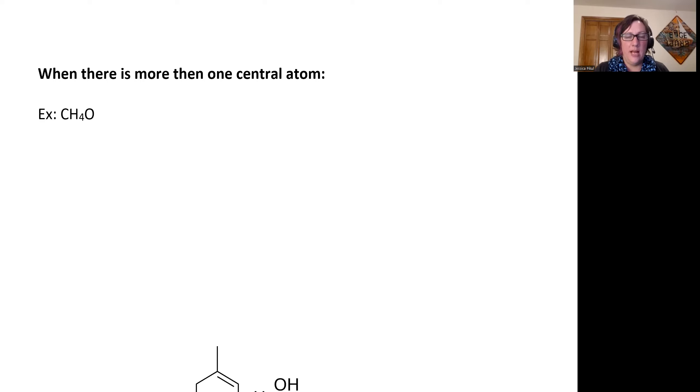In this video, I want to talk about what happens if there's more than one central atom. Previously, we were just looking at one atom in the middle and things around it. This is going to be methanol. I'm just going to walk through my Lewis dot structure process as an example and show how we have two different central atoms.